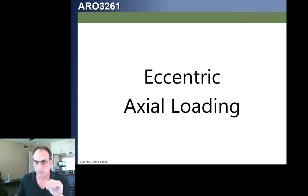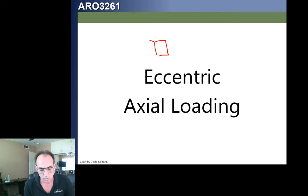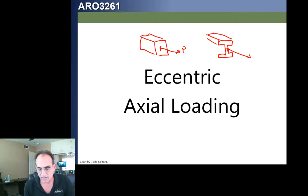What we've been doing so far is pretending that all forces on a cross-section occur at the centroid. For example, if we have a rectangular section, we're assuming any axial load is applied right at the centroid. If we have an I-section, whenever we do P over A, we're assuming that force is applied right at the cross-section's centroid.